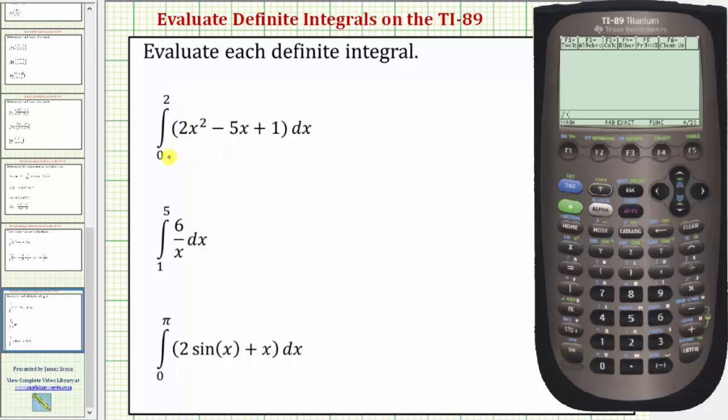So to evaluate this first definite integral we'll enter the integrand function of 2x raised to the power of 2 minus 5x plus 1, comma, the variable of integration which is x, comma, the lower limit of integration which is zero, comma, the upper limit of integration which is 2, close parenthesis and enter.